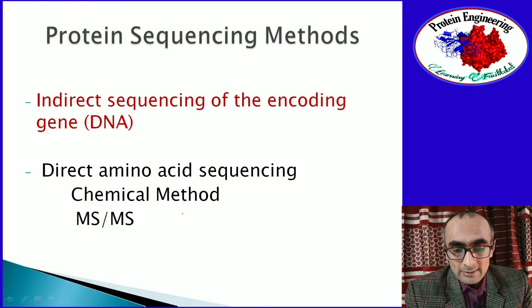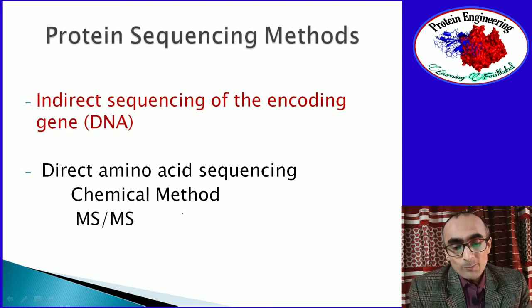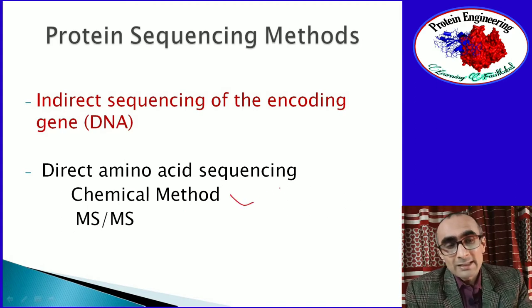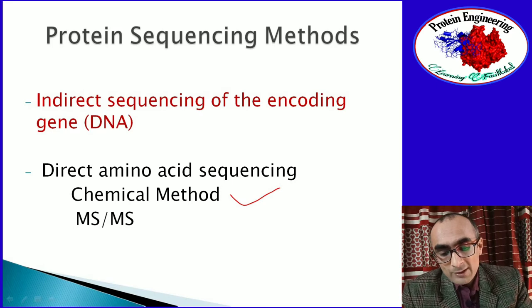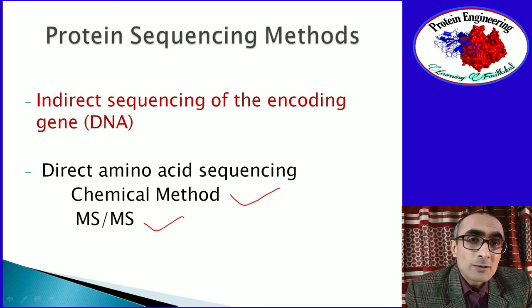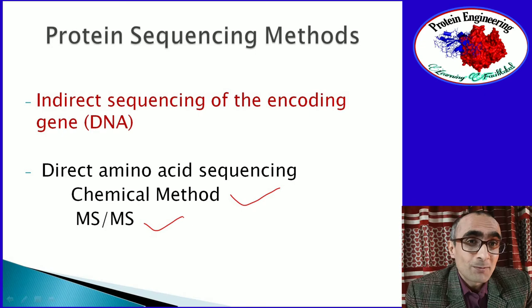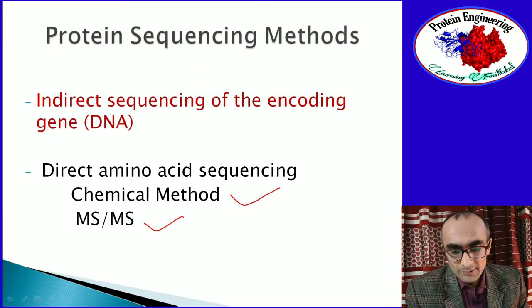The second approach is direct amino acid sequencing. When you have the protein available, that protein can be used to directly determine its sequence. A very important direct approach is the chemical method — the chemical sequencing method — which is what we'll discuss today: Edman degradation. Tandem mass spectrometry is also extensively used today to identify proteins and determine their sequences, but that is beyond the scope of this lecture.